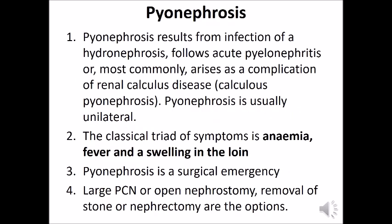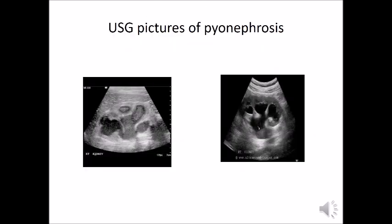Pyonephrosis results from the infection of a hydronephrosis but can follow acute pyelonephritis, or more commonly arises as a complication of renal calculus disease, also known as calculus pyonephrosis. Pyonephrosis is usually unilateral. The classical triad of symptoms is anemia, fever, and a swelling in the loin. Pyonephrosis is a surgical emergency; large percutaneous nephrostomy, open nephrostomy, and removal of stone or nephrectomy are the treatment options.